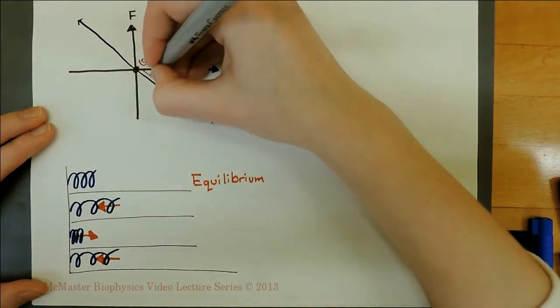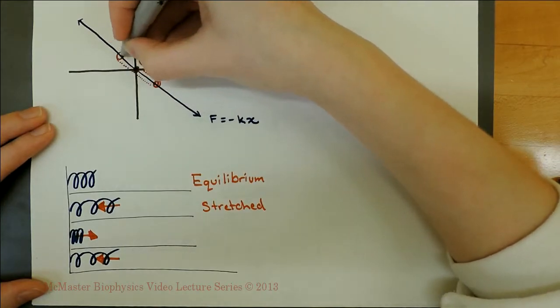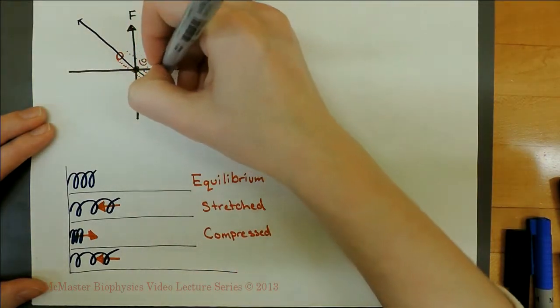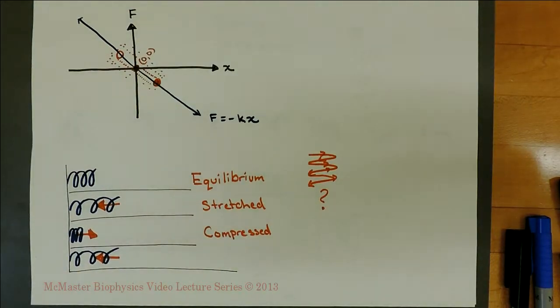When stretched, the spring produces a force back towards equilibrium, passes through equilibrium, and goes right to compression, where it produces a force towards equilibrium again. The spring moves back and forth between these positions, a motion known as oscillation.